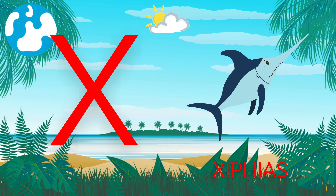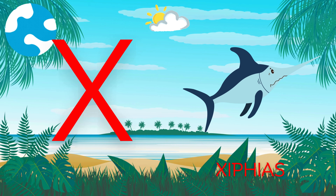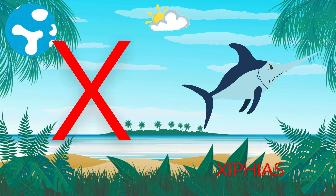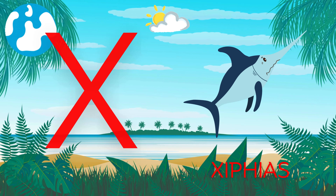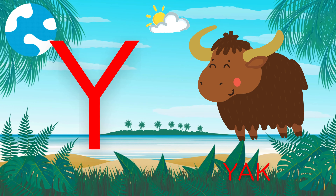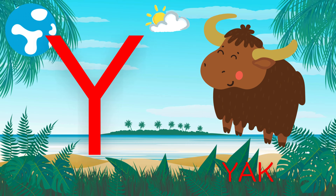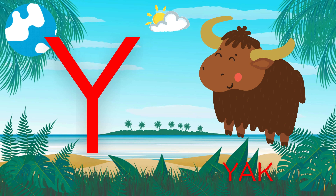W is for whale. V, V, V, W. X is for ox. X, X. X is for ox. Y is for yacht. Y, Y, Y, Y.